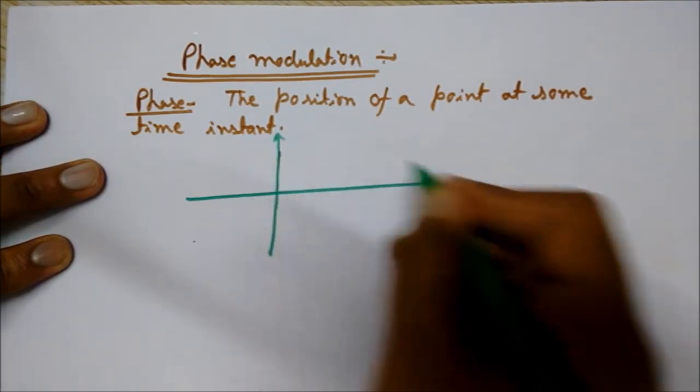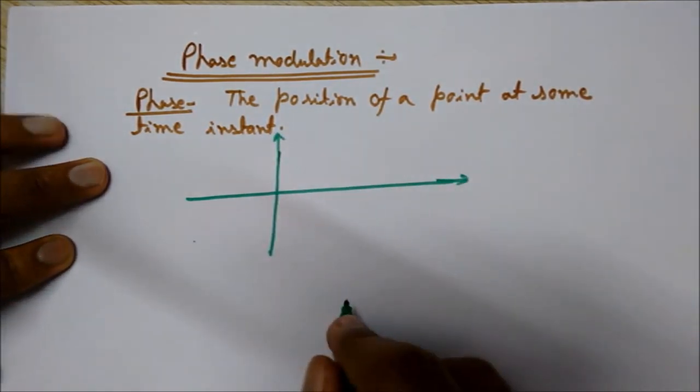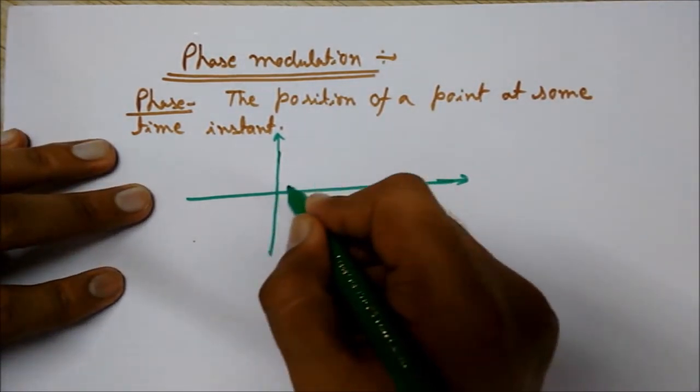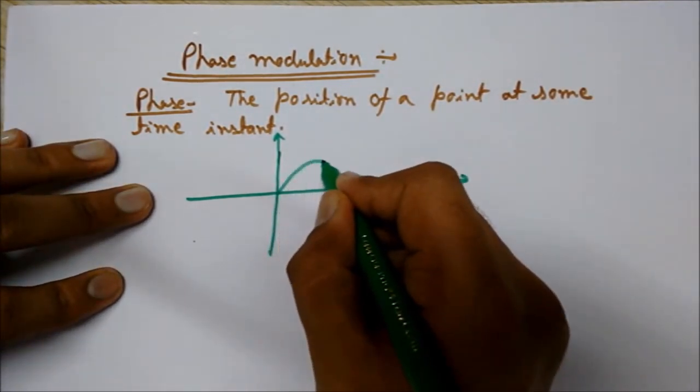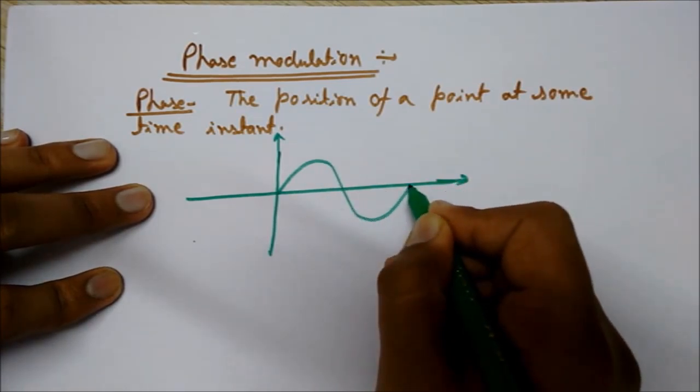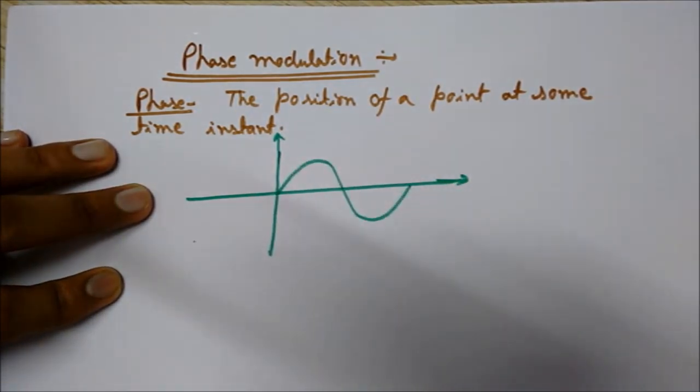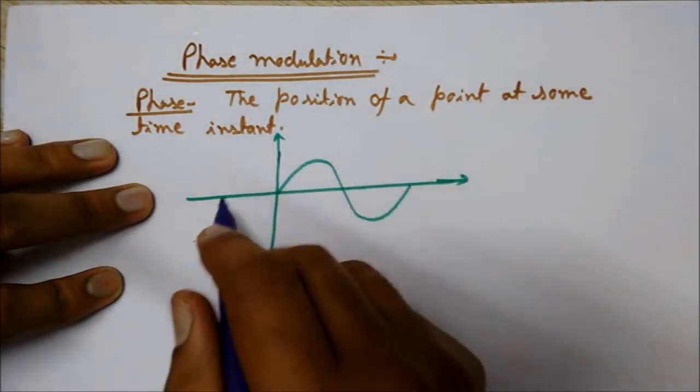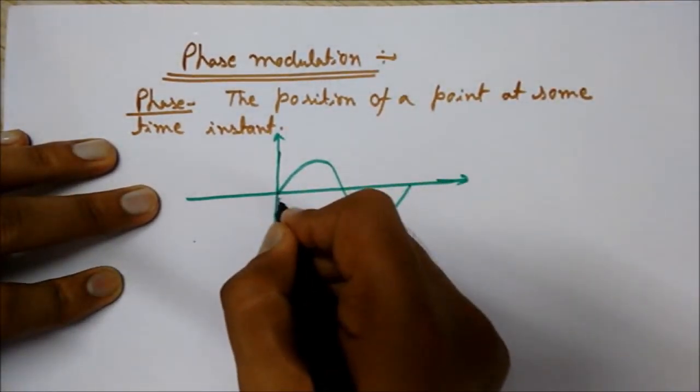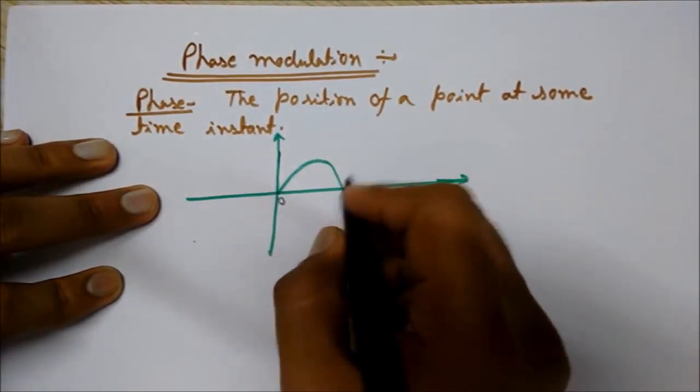Here I will draw two waveforms, two sinusoidal waveforms having some phase difference. This is the first wave and this one is the second. You know this point. This is zero. This is a sinusoidal wave.